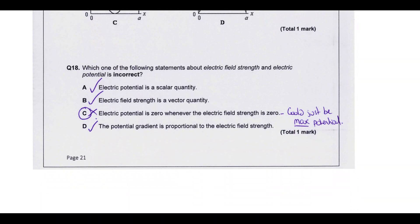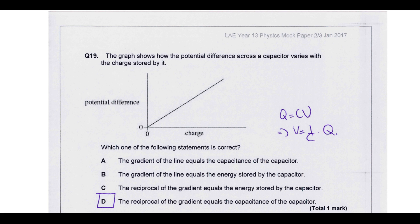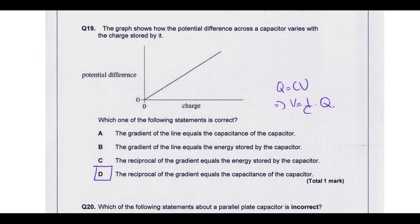Which one of the following statements about electric field strength and electric potential is incorrect? Potential is a scalar quantity - it absolutely is. It's like a form of energy. So it's going to be a scalar. Field strength is a vector quantity. It's a force. So yes. Potential gradient is proportional to electric field strength. That's actually true. The electric field strength is often called the potential gradient. That's something that's useful to know. So by process of elimination, it's going to be C. But to see why - electric field strength is the potential gradient. When it says field strength is zero, that just means the gradient of your potential graph is zero. So it could be constant at a non-zero value and with a gradient of zero. So then that's not going to be true.